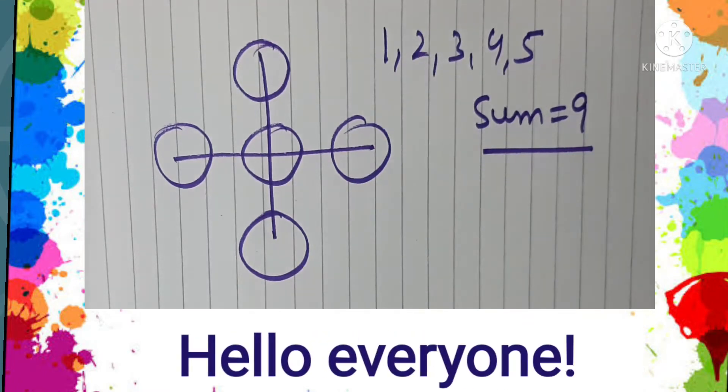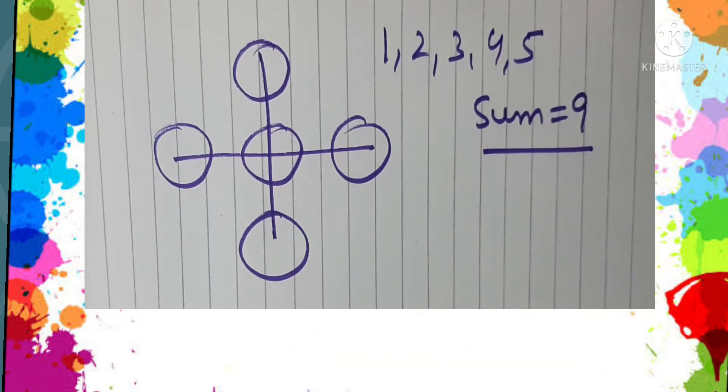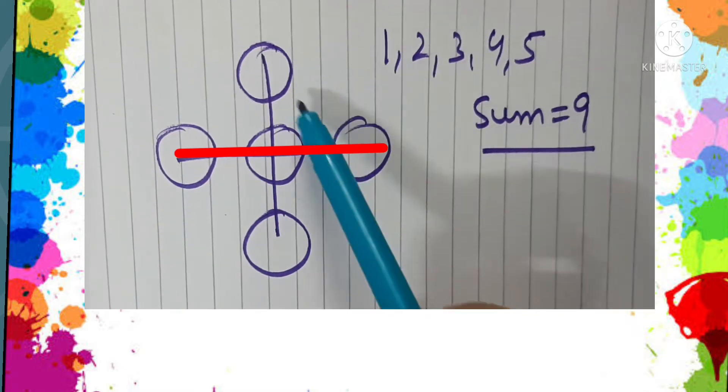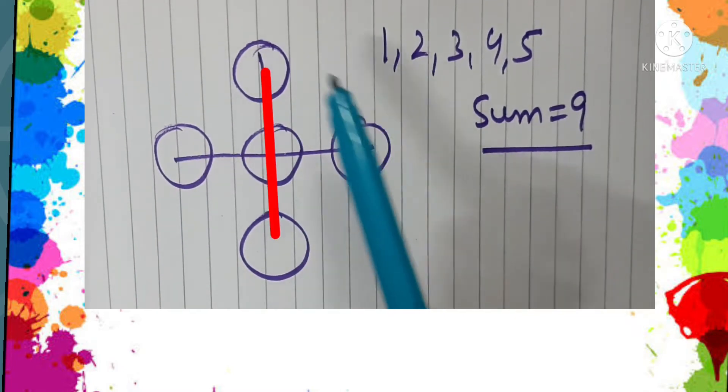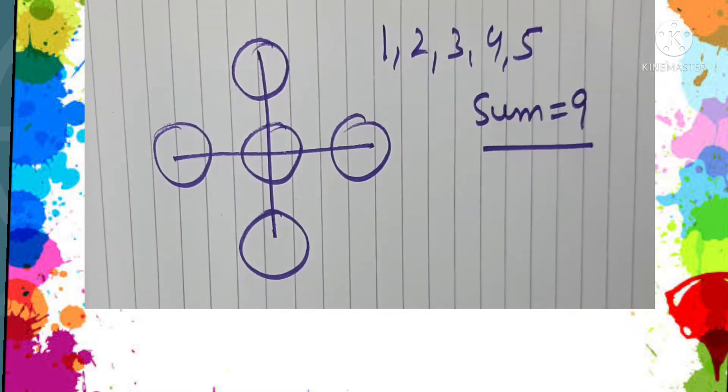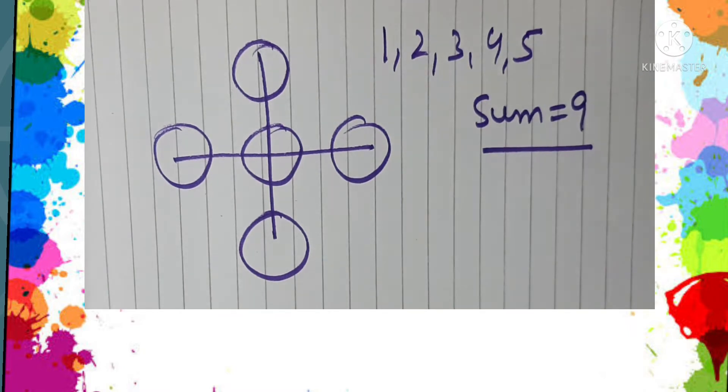Hello everyone, are you ready to solve today's puzzle? It's an interesting number puzzle. You can see that there is a horizontal line and a vertical line, and five circles have been placed on the two lines.